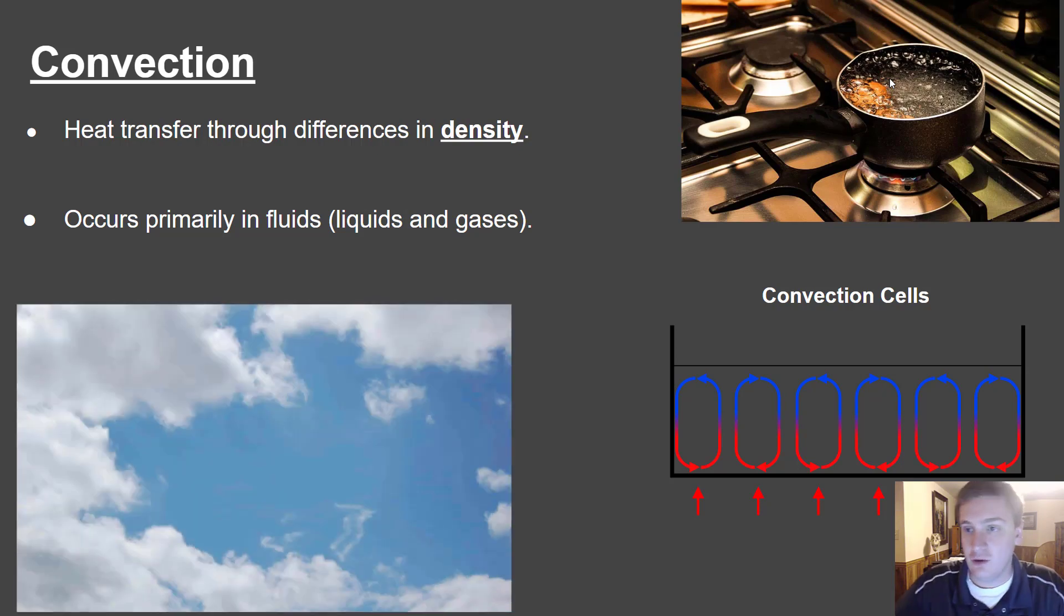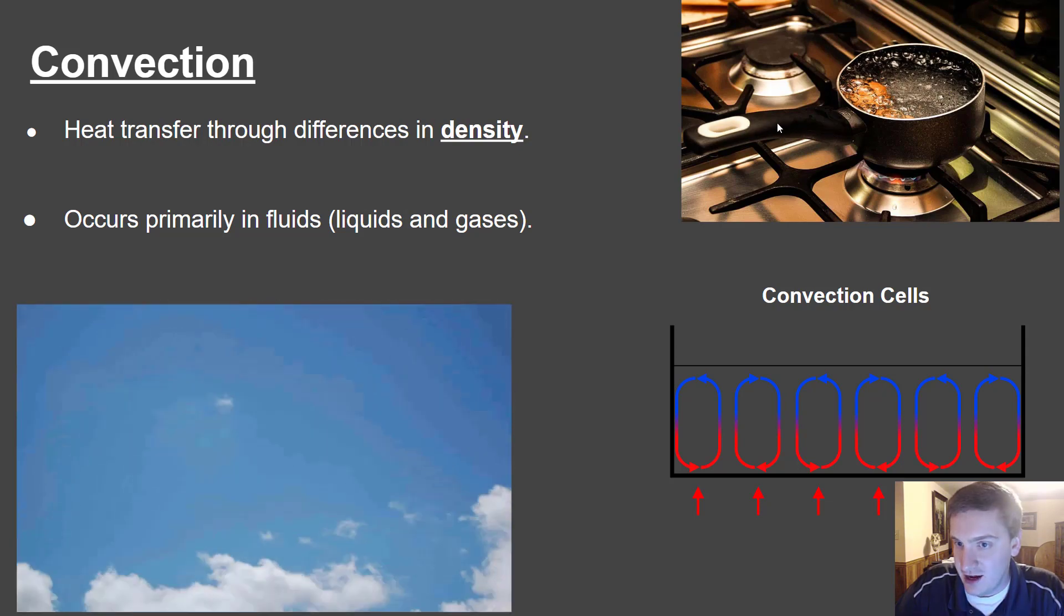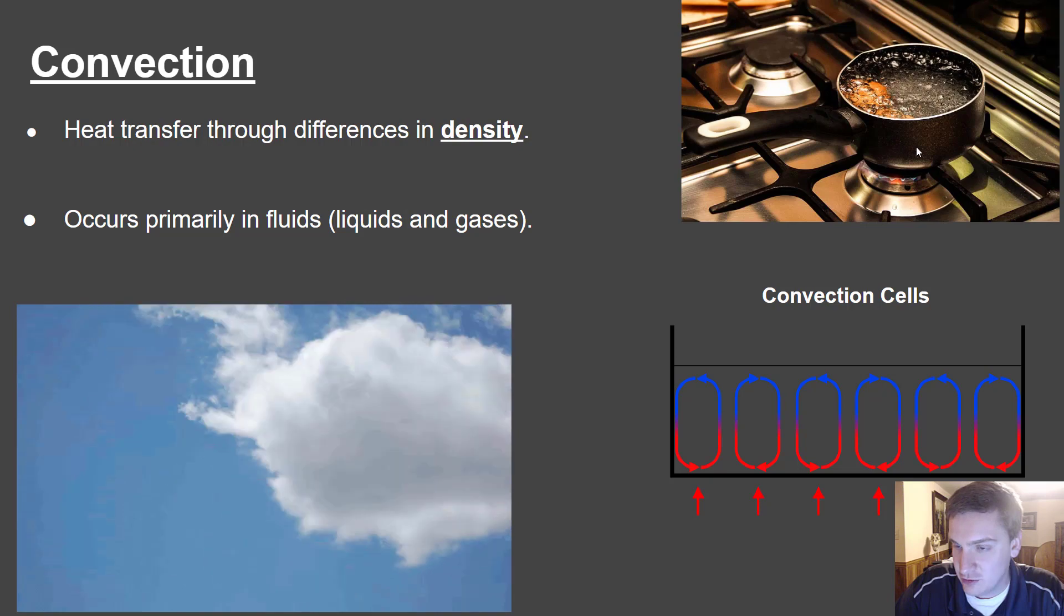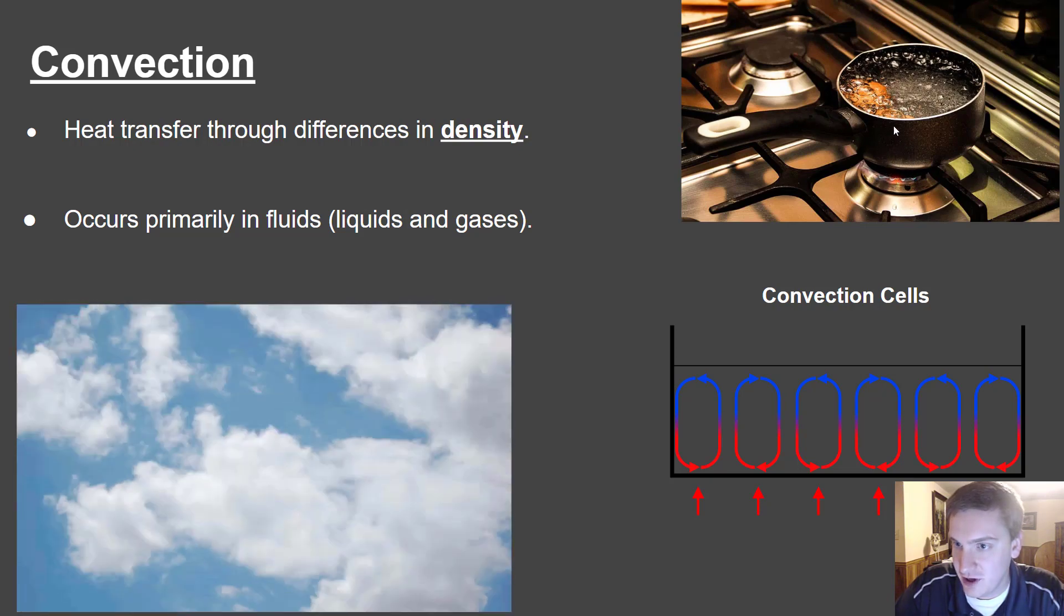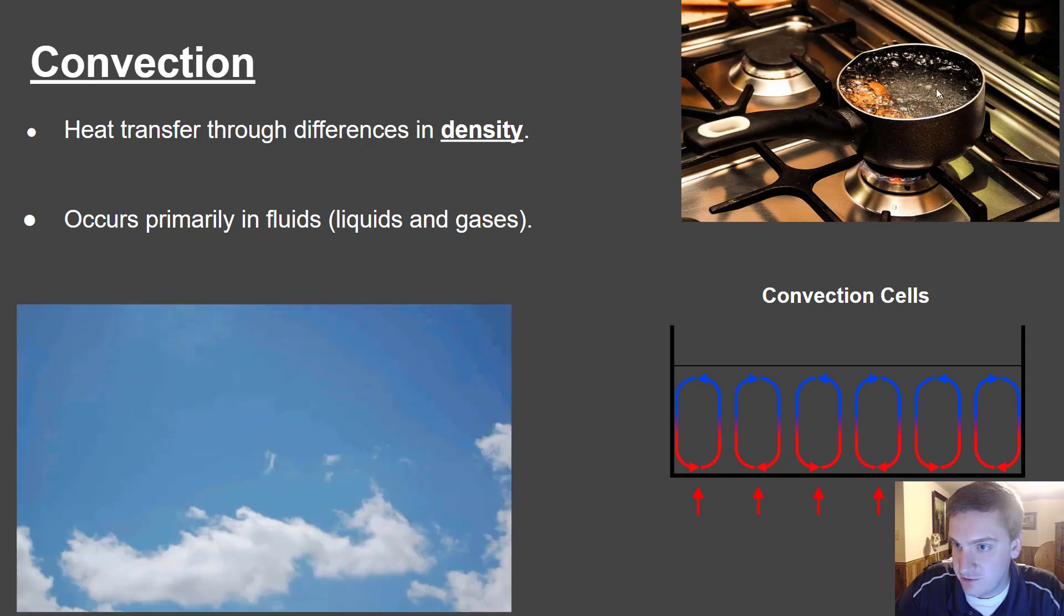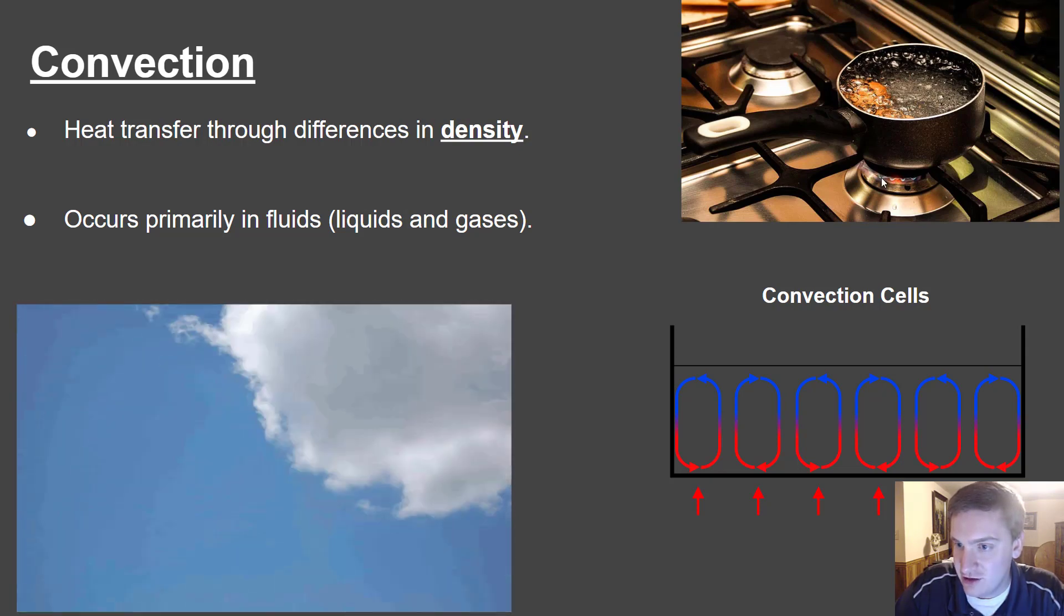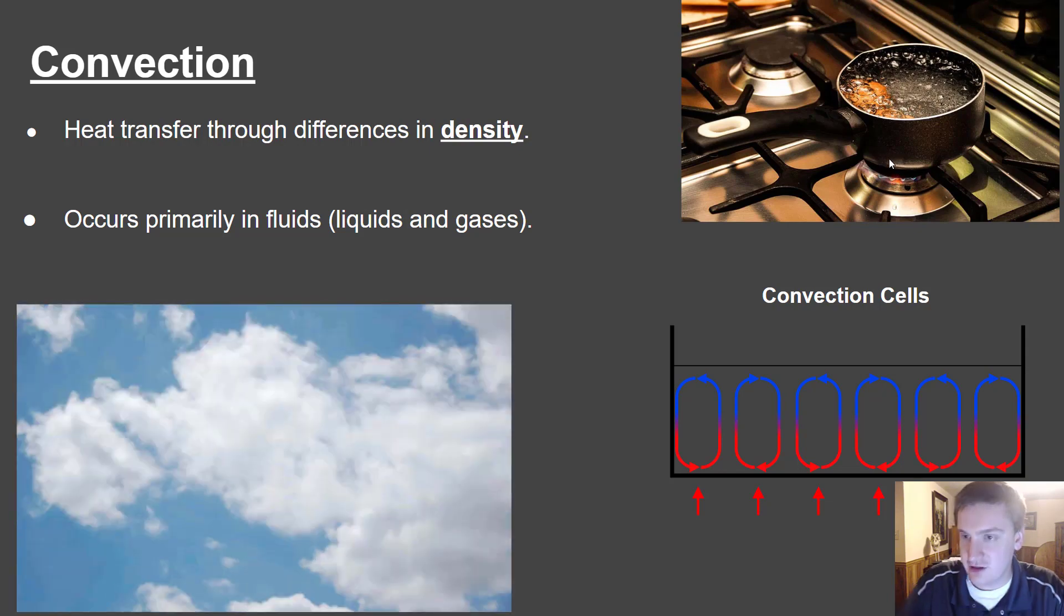Going back to our pot of boiling water example for a second. Conduction, remember, was the handle of this pan getting really hot because the molecules were directly interacting. The metal was conducting the heat from the heat source really well. The process of convection, we're going to focus on the actual water itself. And so what's going to happen is that you have your heat source down here, and some of that water here at the bottom is going to start to heat up.